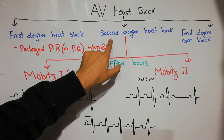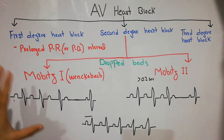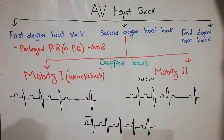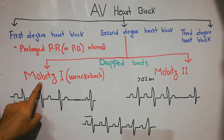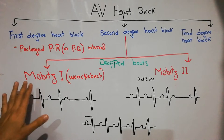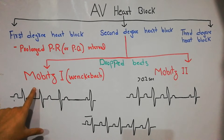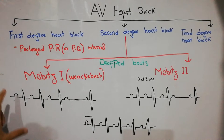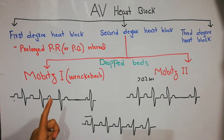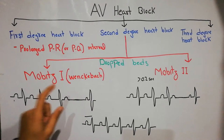Just as we call the prolonged PR interval the first degree heart block, we call the second degree heart block 'drop beats.' The second degree heart block has two types, and both types have dropped beats. The first type is known as Mobitz Type 1, or the Wenckebach phenomenon. In Mobitz Type 1, there is persistent, continuous prolongation of the PR interval, and finally there is a dropped beat — an absence of the QRS complex.